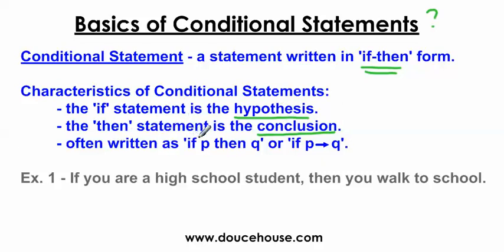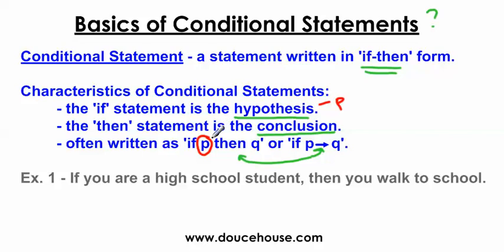It's often written as 'if P, then Q,' where the arrow represents the word 'then.' That's just an abbreviated form. The P is representing whatever you put in for the hypothesis — it's a blank statement for every single conditional statement, so whatever the hypothesis is will be the P. Whatever the Q is will be the conclusion. I need you to know that the if-statement is the hypothesis and the then-statement is the conclusion.